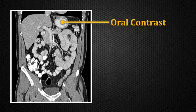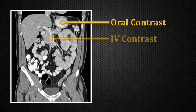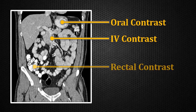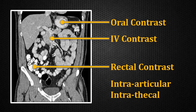This particular patient has received contrast in several different ways. We see contrast inside of the stomach, which means the patient received oral contrast. We can also see contrast in the small bowel, again indicating oral contrast. We can also see contrast in the blood vessels of the portal system, confirming that the patient received intravenous or IV contrast. This patient also shows very dense contrast in the descending colon and in the rectum, meaning the patient has also had rectal contrast. Other routes include intraarticular contrast — meaning in the joint — and intrathecal contrast, meaning in the spinal canal.